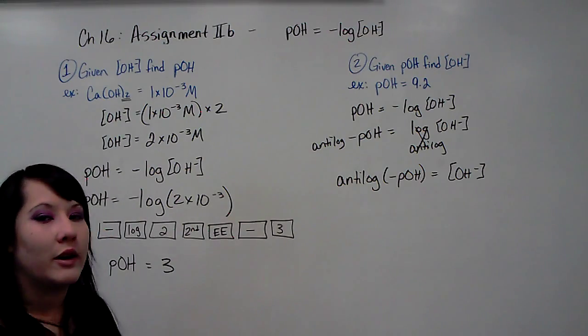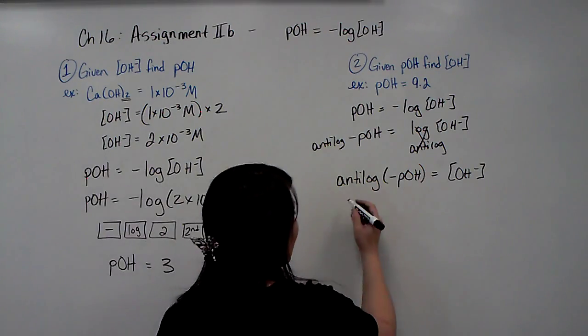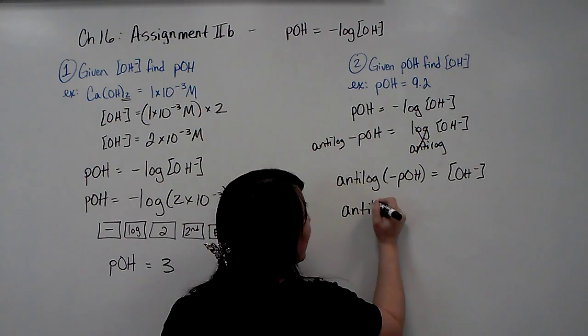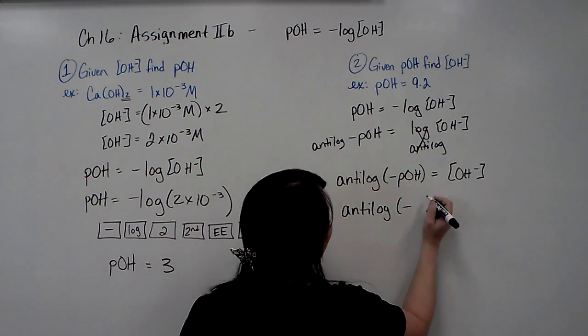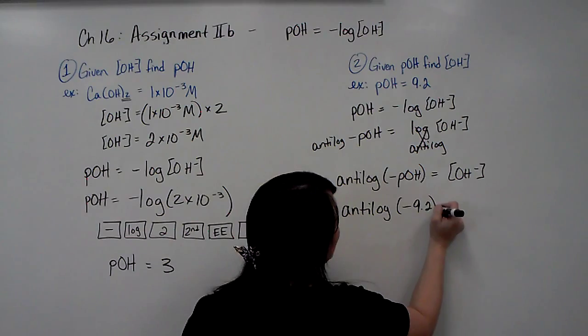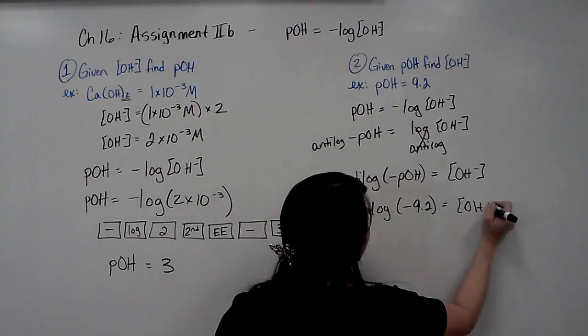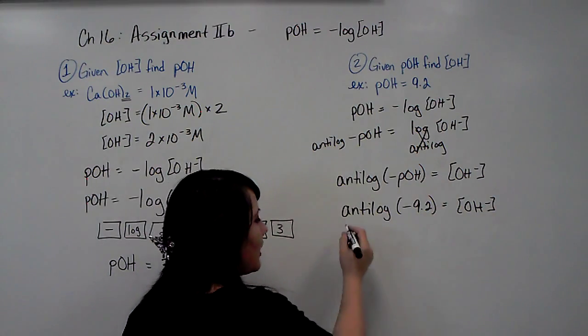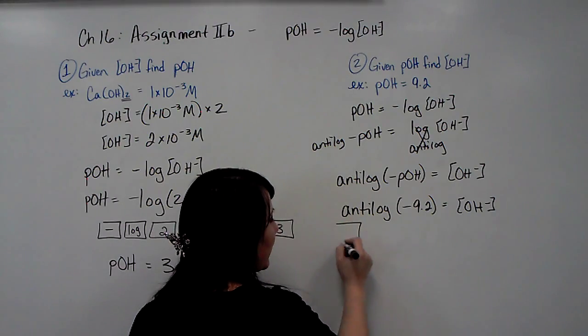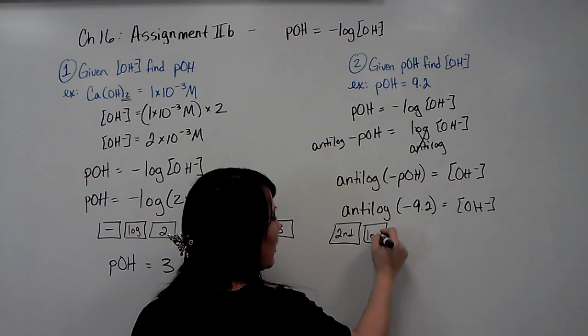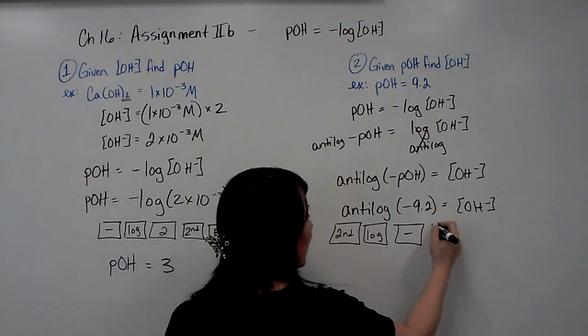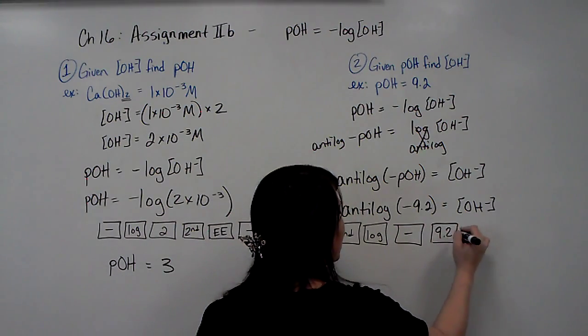Now that we've rearranged our equation, we'll go ahead and plug in our POH that was given. Anti-log of negative 9.2 is going to equal the hydroxide ion concentration. This is how you will enter it in your calculator. 2nd log negative 9.2.